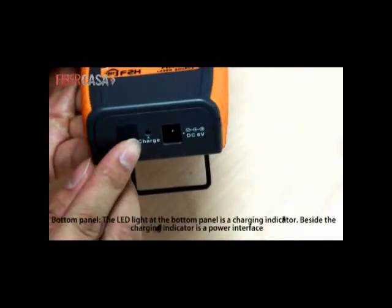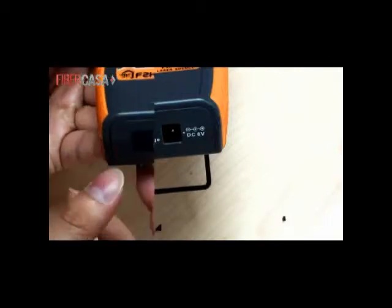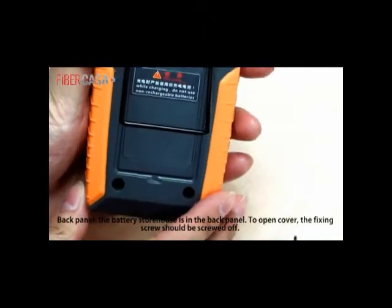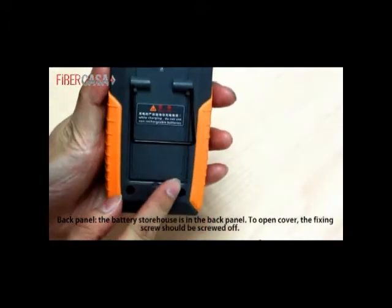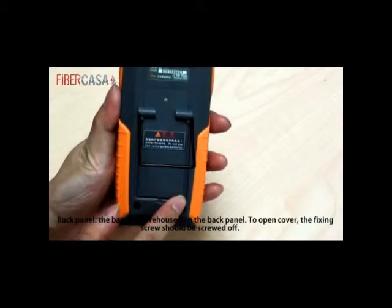The bottom panel. The LED light at the bottom panel is a charging induction. Besides, the charging induction is a power interface. Back panel. The battery storehouse is in the back panel. To open cover, the fixing screw should be screwed off.